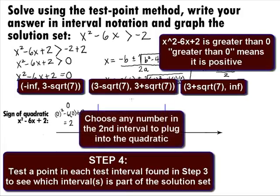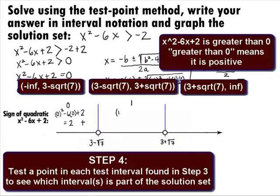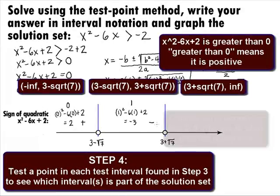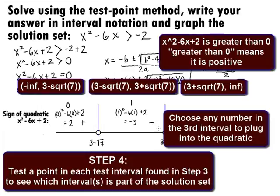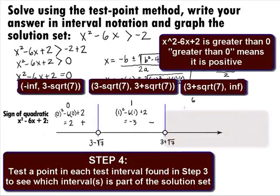Let's choose 1 from the second interval, 3 minus square root of 7 to 3 plus square root of 7. Plugging in 1, we get 1 squared minus 6 times 1 plus 2, which simplifies to negative 3. Since we got a negative number and we are looking for a positive, this interval is not part of the solution. Let's choose 6 from the third interval, 3 plus square root of 7 to infinity. Plugging in 6, we get 6 squared minus 6 times 6 plus 2, which simplifies to 2. Since we got a positive number and we are looking for a positive, this interval is part of the solution.